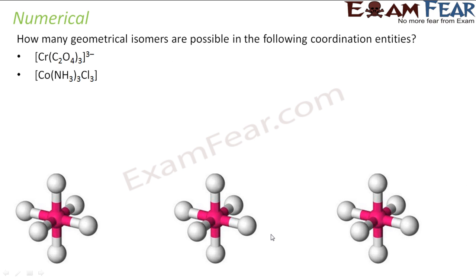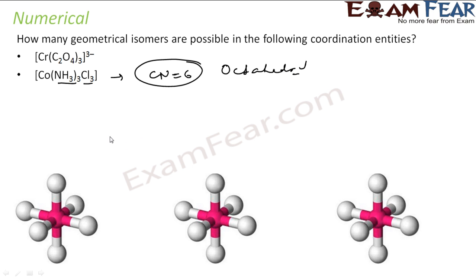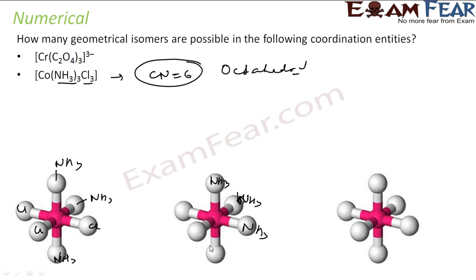Next case: three ammonia and three chlorine molecules, coordination number six — again octahedral. I can put two ammonia at the extremes with one ammonia here, or arrange them differently. One arrangement has all NH3–NH3 bonds at 90 degrees; another has one NH3–NH3 bond at 180 degrees. These are the two possible geometrical isomers.